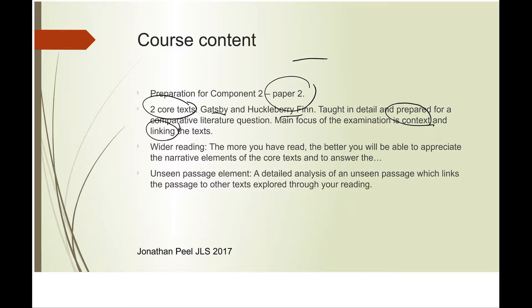There is a definite requirement for you, reading these texts, to engage with as much wider reading as you can. The more you've read, the better you'll be able to appreciate the narrative elements of these texts, but also to answer the unseen question, which is the second half of that paper. You will be given a passage of unseen American literature, and your task will be to do a literary analysis of this passage, but also to make links from the passage to other works of American literature where you can see similarities developing.